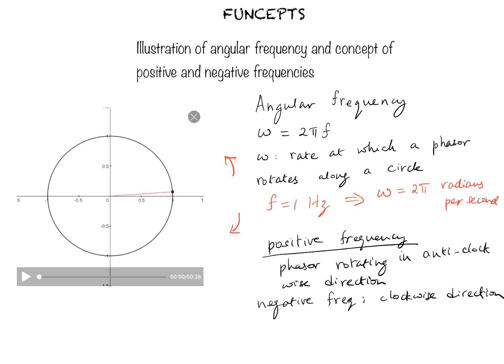The angular frequency is the amount of angle covered by the rotating phasor in one second. That angle is positive if the phasor is rotating in the counterclockwise direction, and negative if the phasor is rotating in the clockwise direction. It should be remembered, however, that negative frequencies do not exist in reality and we cannot generate any signal with a negative frequency in the real world. Negative frequencies arise only as a mathematical convenience, as we will see in later lectures.